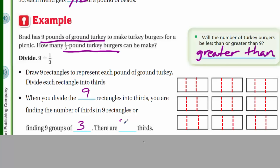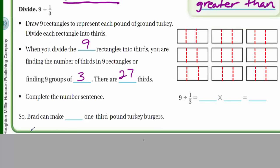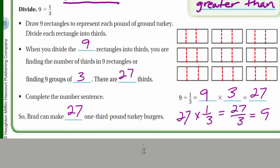Therefore, there will be 27 thirds. And now complete the number sentence. We have nine divided by one-third then is equal to nine times three, which is equal to 27. Because we have three thirds in one whole here, and we have nine of them. So that would be 27. Way to check our work is to take that 27, just multiply it to one-third. We end up with 27 over three, which does equal nine. So Brad can make 27 one-third pound burgers.